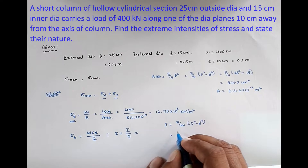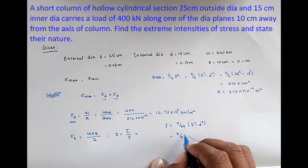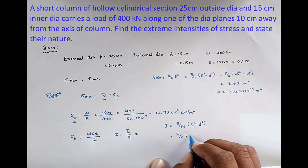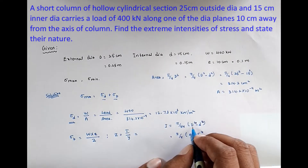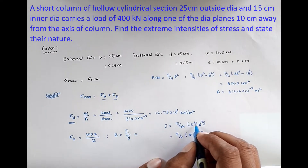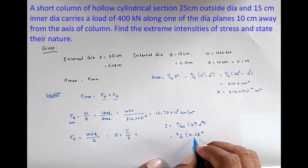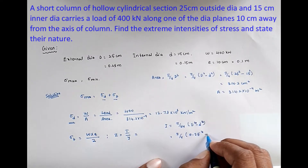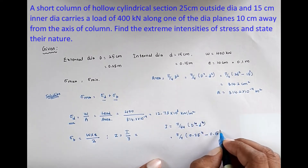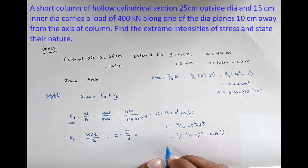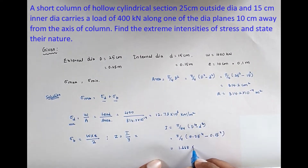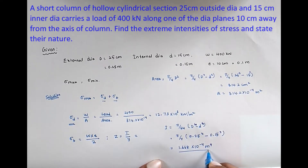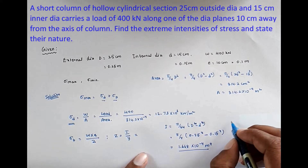Substituting: I = (π/64) × (0.25⁴ − 0.15⁴), which gives I = 1.668 × 10⁻⁴ m⁴.